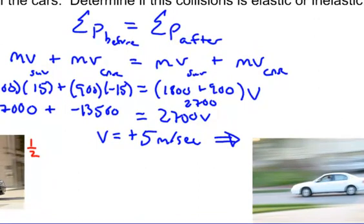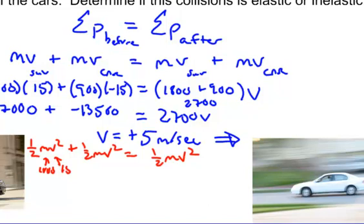You want to do your energies. 1.5 mv squared before, plus 1.5 mv squared before the collision, equals 1.5 mv squared after the collision. And what you want to do is you want to plug in your 1800 here. You're going to plug in your 15 meters per second and make sure you square it. You're going to plug in your 900 here. You're going to plug in your negative 15 meters per second and you're going to square it, which is the same.